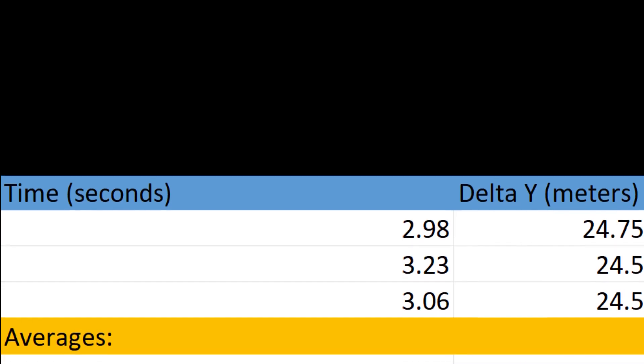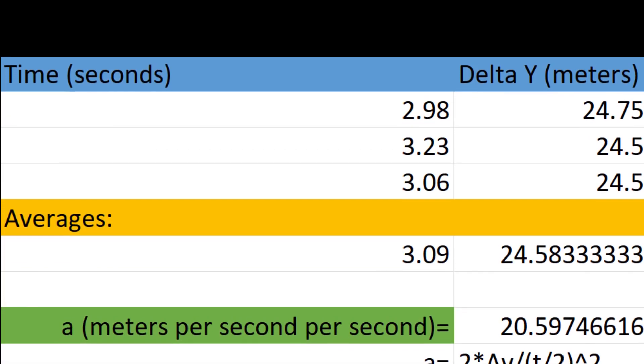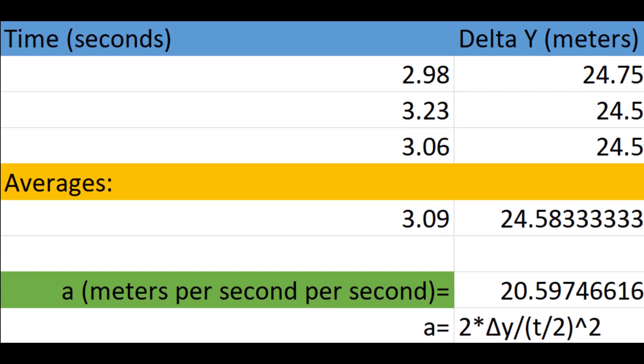Using this data, we find the average time and height for each of the launches and substitute it into the equation we derived earlier in the video: a equals 2y over (t/2) squared. Which brings us to approximately 20.6 meters per second squared, a little more than 2 times Earth's gravitational acceleration.